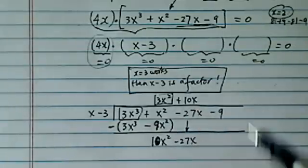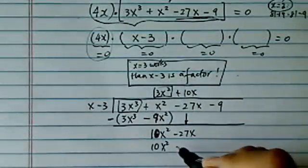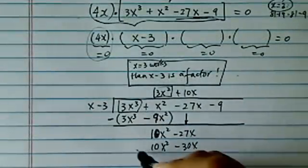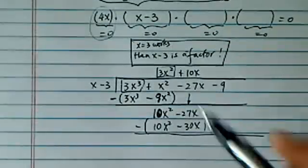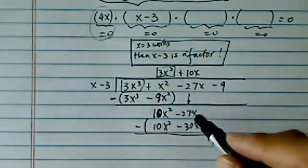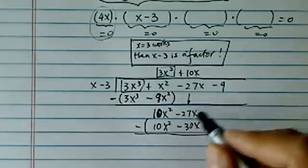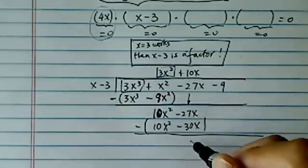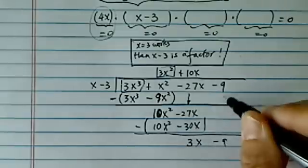Once again, I'm just matching the leading term. So it's 10x. And then I have 10x² - 30x. Once again, remember the minus sign. Vocalize it, give your math a voice. 10x² - 10x² goes away. -27 minus minus is plus. So it's -27 + 30. So you come ahead with 3x - 9. That's this chunk.